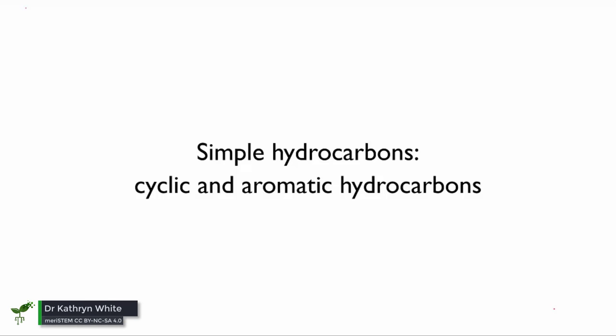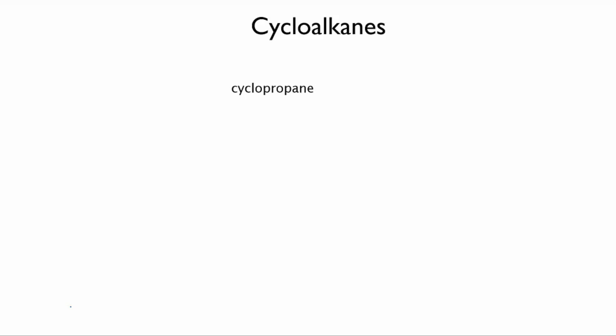So far we've just looked at chains of carbons, but it's also possible to make rings. If you take a straight chain alkane, like propane, and curl its ends around and join them together, you have cyclopropane.